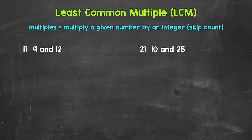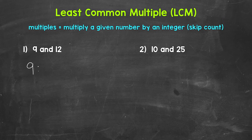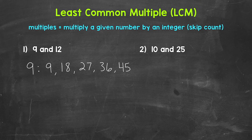This will make a lot more sense as we go through our examples. Let's jump into example one, where we have 9 and 12. We're going to start by listing some multiples of both 9 and 12, then look for the least common multiple, also referred to as the LCM. Multiples of 9: 9 times 1 is 9, 9 times 2 is 18, 9 times 3 is 27, 9 times 4 is 36, and 9 times 5 is 45.